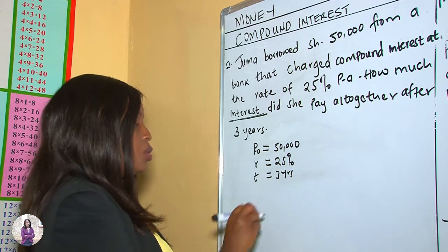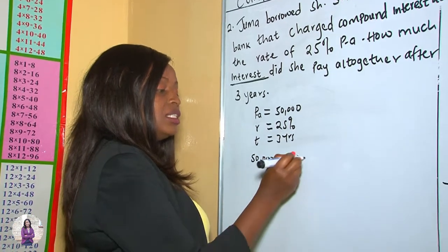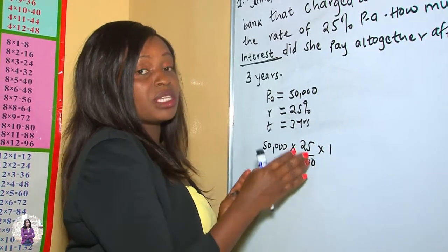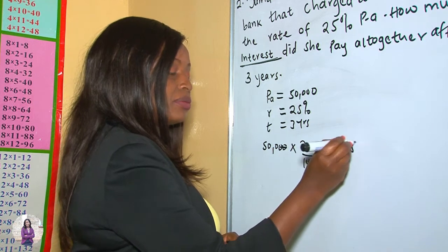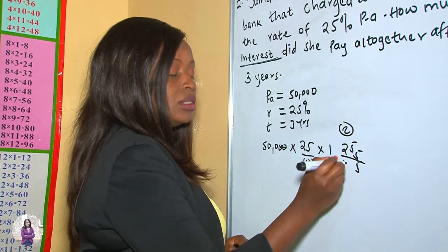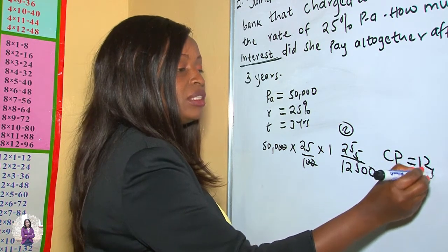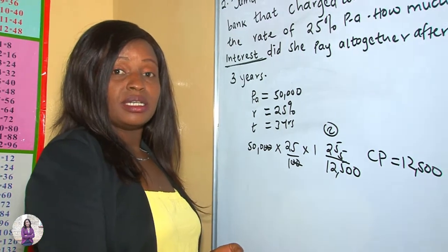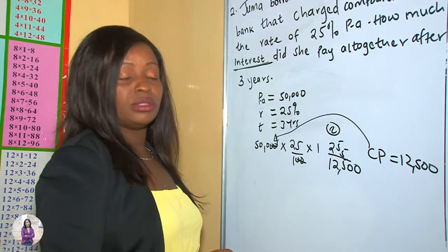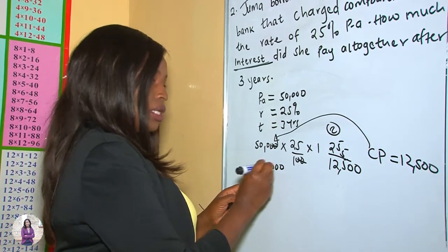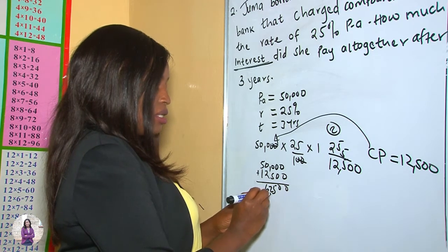For year one: CI = $50,000 × 25/100 × 1. The zeros cancel, giving 500 × 25 = $12,500. So the compound interest for the first year was $12,500. Adding this to the principal: $50,000 + $12,500 = $62,500, which becomes the principal for the second year.